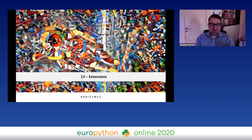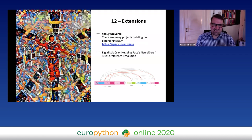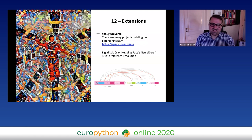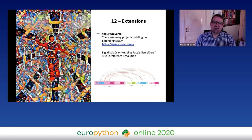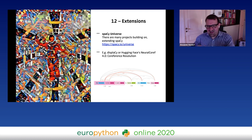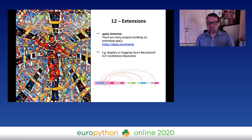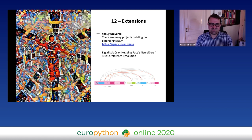spaCy has a whole universe of extensions I'd recommend looking into. For example, there's an extension from Hugging Face, which also puts a lot of stuff into open source. One handy example is neural coreference resolution. If you say 'Angela Merkel just announced a big tax relief package — the Chancellor,' the coreference resolution would replace 'the Chancellor' with 'Angela Merkel' again. When analyzing text, we need to know who the reference for 'Chancellor' is, and that Angela Merkel should be the same reference.